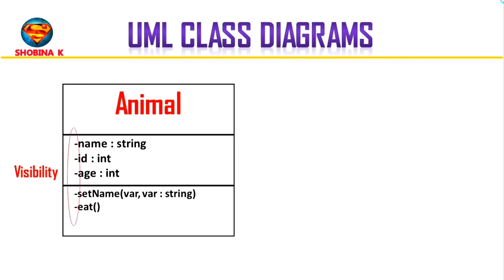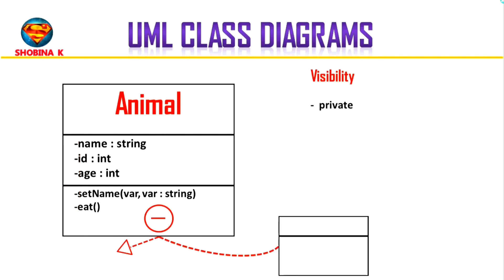Now let's talk about visibility. The visibility of an attribute or method sets the accessibility for that attribute or method. Right now we have a minus sign for all of these, which indicates that each of these attributes and methods are private — they can't be accessed by any other classes or subclasses. The exact opposite is the plus sign, which means an attribute or method is public and can be accessed by any other classes.